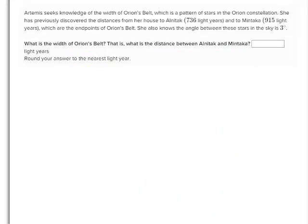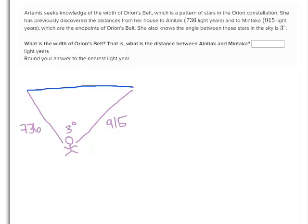Now let's try a problem where we use the law of cosines. Here we have someone trying to measure the width of Orion's Belt, a constellation in the sky. We have a person standing here who measures the distance from herself to one edge of the belt: 736 light years. She then measures the distance to the other end: 915 light years. The angle in between is 3 degrees. She would like to know the width of the belt, which we'll call A.